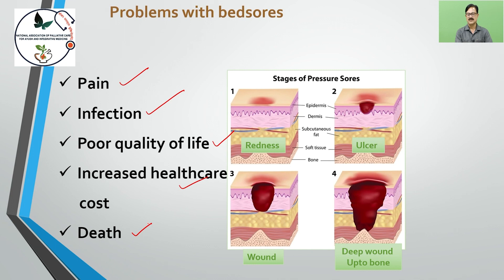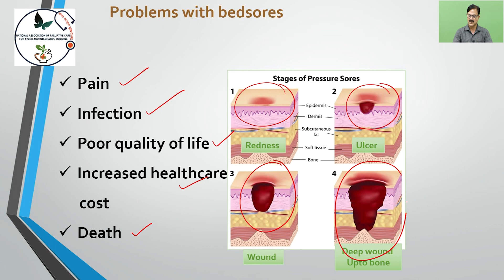The stages of pressure sores are described here. Initially there is redness, then an ulcer forms, it turns into a wound, and finally this wound reaches down to the bone.